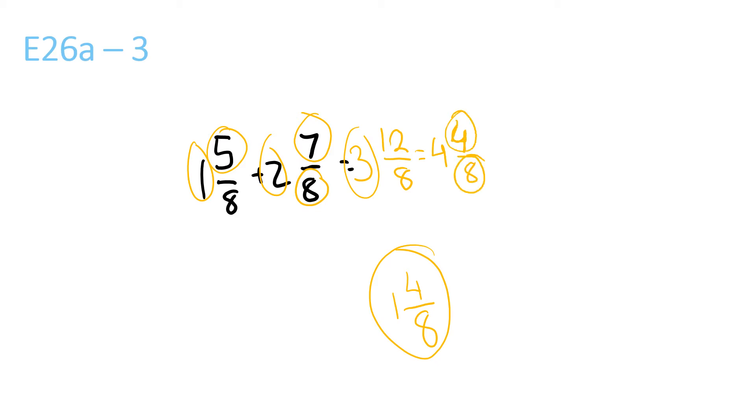The biggest number that 4 and 8 are both divisible by is 4. So you divide by 4 and it's 4 and 1 half, because 4 divided by 4 is 1 and 8 divided by 4 is 2.